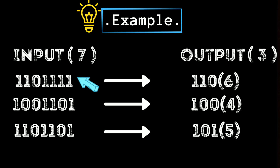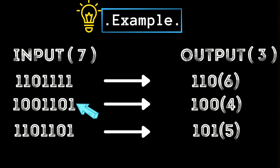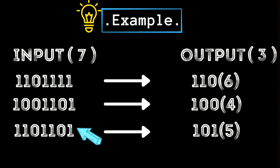We need to design a circuit which will add the number of ones and give the output in binary. In the first example, the output is 1 1 0, that is six — the number of ones in the input. In the second example, the input has four ones, so the output is 1 0 0, that is four in decimal. In the third example, the input has five ones, so the output is 1 0 1, which is five in decimal.